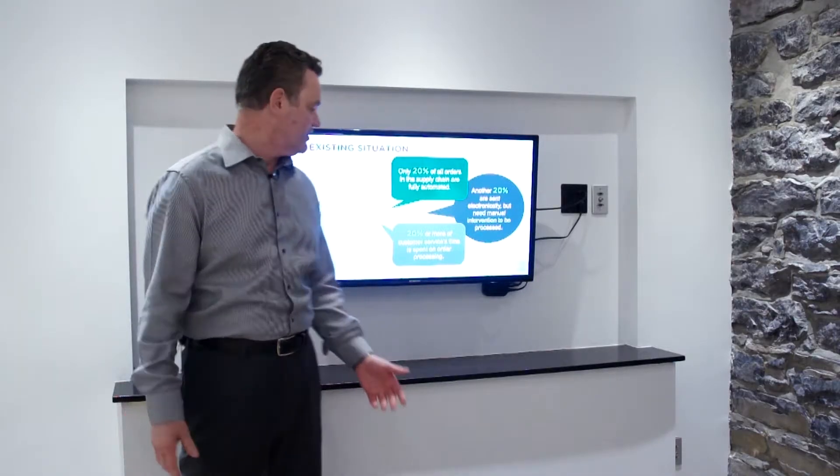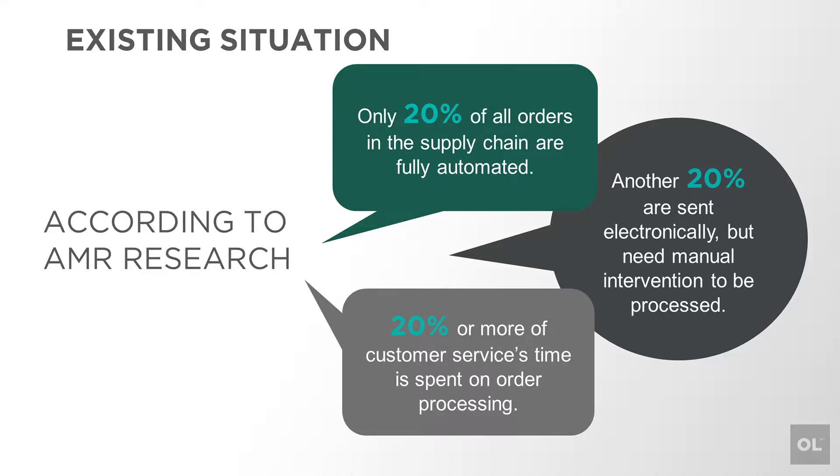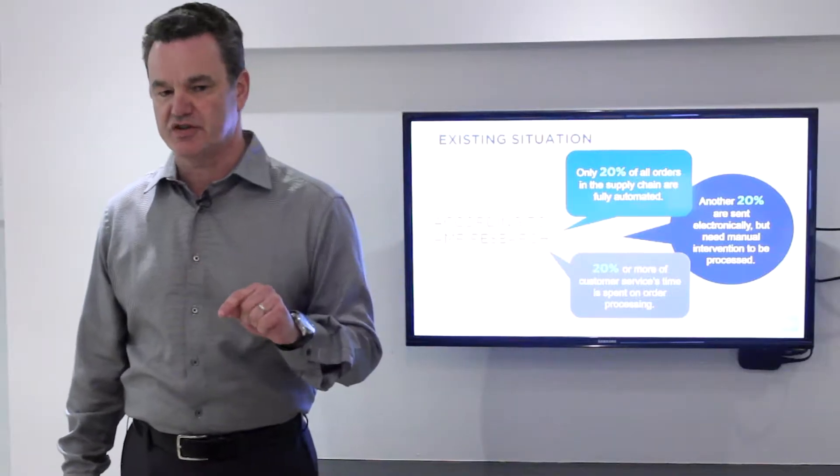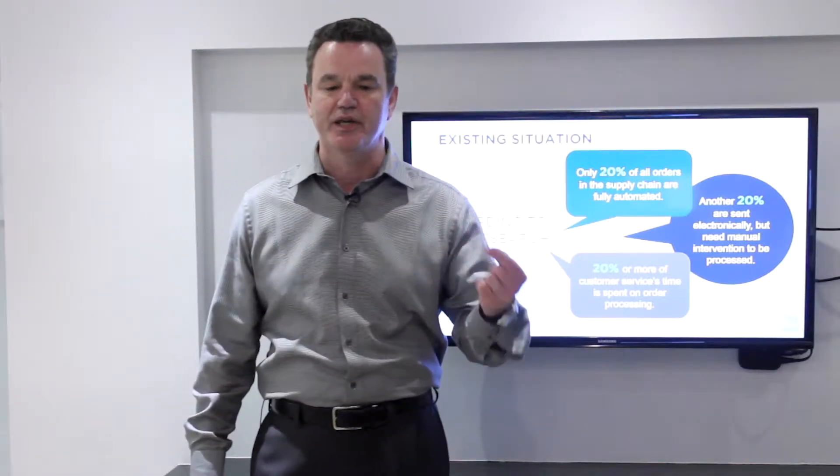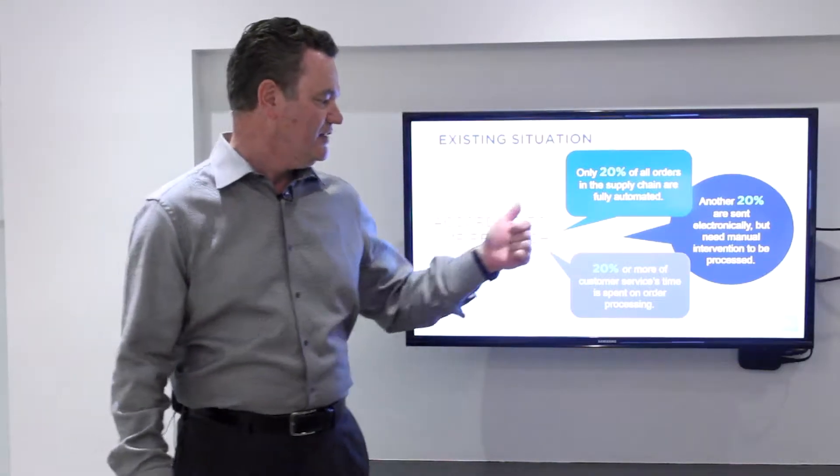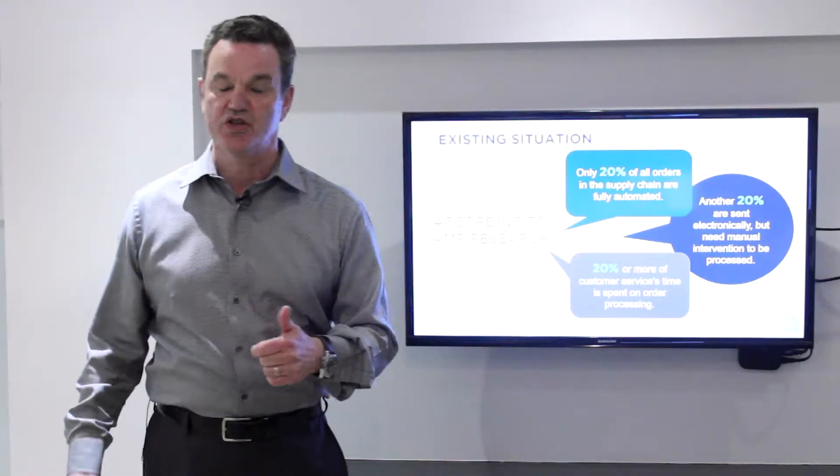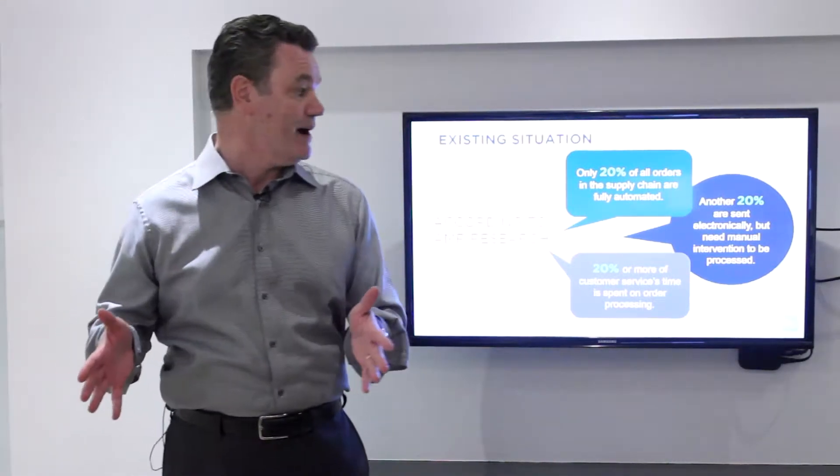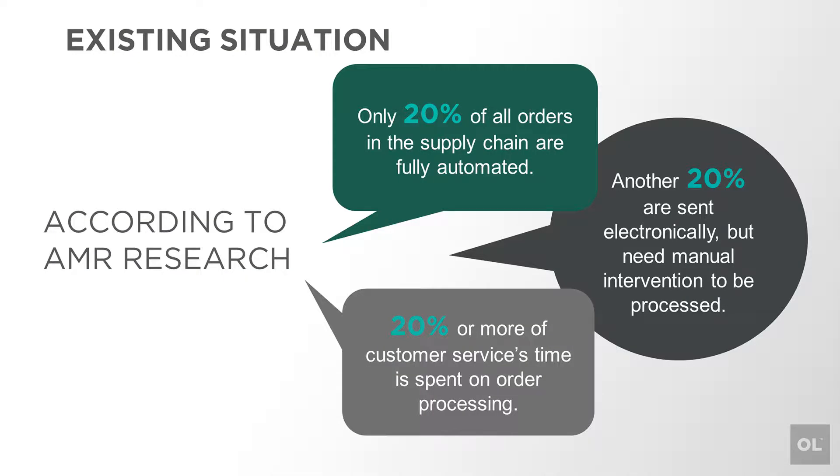Let's take a look at some industry statistics. AMR research has determined that about 20% of inbound purchase orders are actually fully automated. That's interesting, those are actually electronic coming in as EDI transactions. That means that 80% of purchase orders are some kind of paper document that's got to be keyed manually. 20% of the balance of the transactions, 20% are electronic, 20% come in as PDFs.